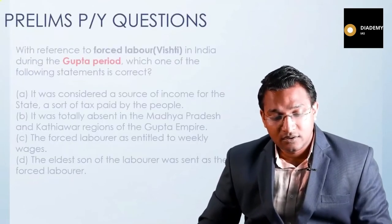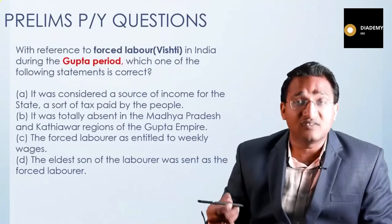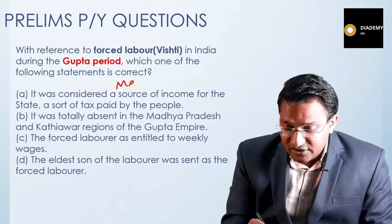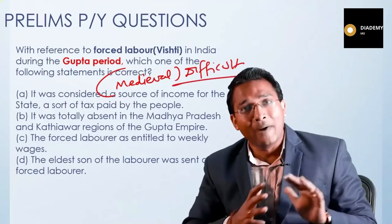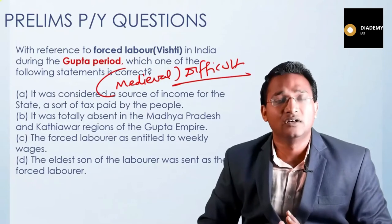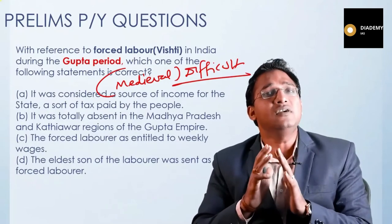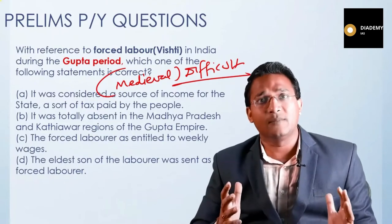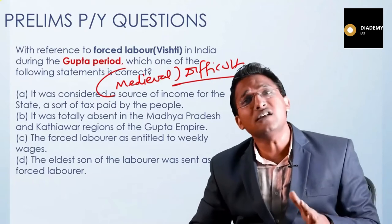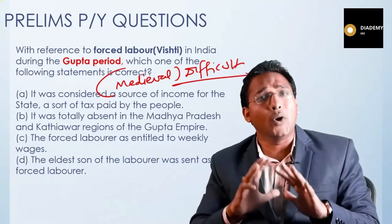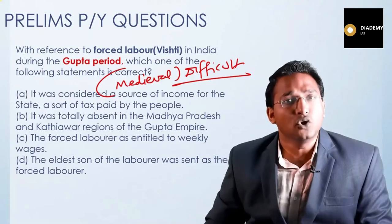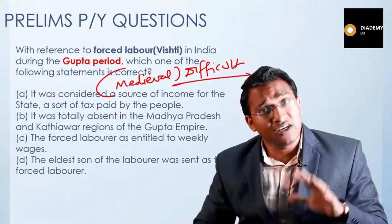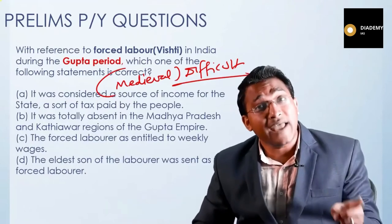The next question is about forced labor in history in India from the medieval history — this is one of the difficult questions. So the Charter Act question was medium, the Mahayana Buddhism question was easy, and this question is difficult. The point is that questions will have a diversity in terms of difficulty. You don't need to solve 100% of the questions; if you solve 90% with accuracy, you are through. Focus on accuracy in the questions you do attempt — that is the most important thing.